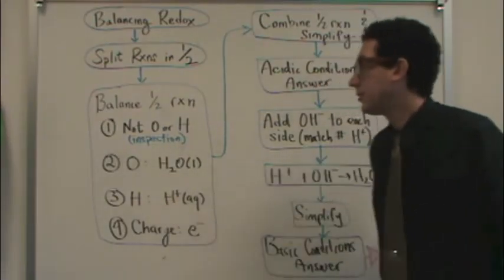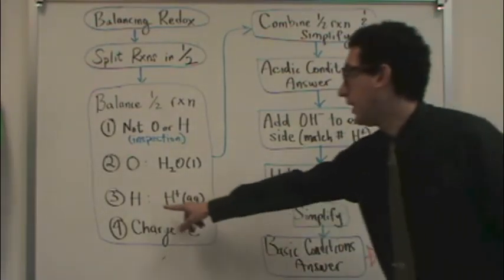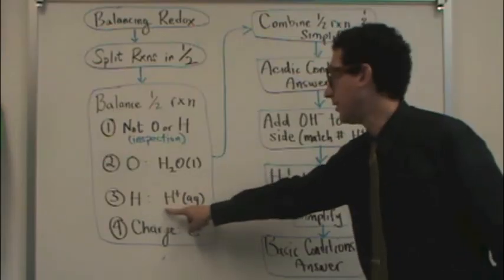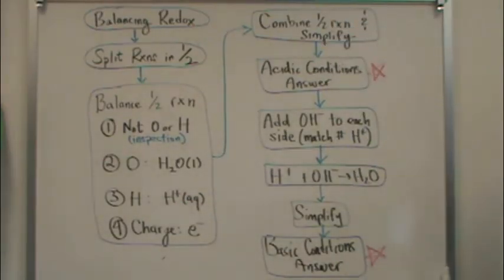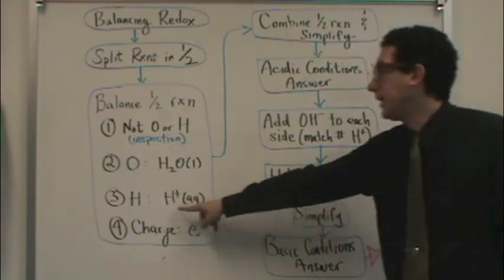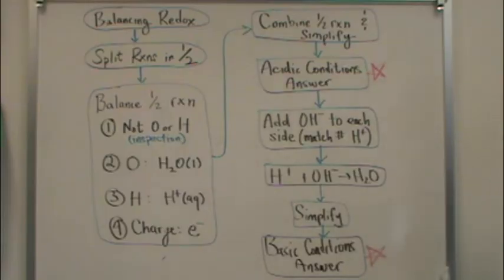Step three, you balance the hydrogen, but not with randomly putting hydrogen in there. Use H plus. Why H plus? Well, because for this method, we're balancing it in what's called acidic conditions, and H plus represents acid. So you use H plus to balance the hydrogen.